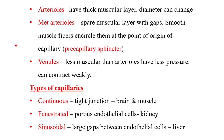A quick review of the anatomy of arterioles: they have a thick muscular layer, and because of that muscle contraction, the diameter of arterioles can change. The metarterioles have a scarce muscular layer with gaps in it.